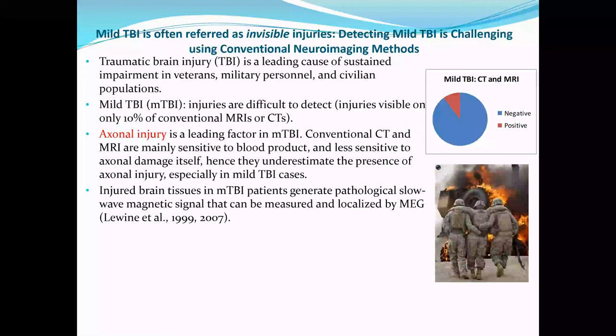Detecting mild TBI has been quite challenging using conventional neural imaging methods, even though TBI is the leading cause of sustained impairments in the veteran population, military personnel, and also the civilian population. When you use conventional CT or MRI structural imaging for detecting mild TBI, the sensitivity is quite limited — about 5 to 10 percent. The positive findings are a very small percentage using conventional CT/MRI.